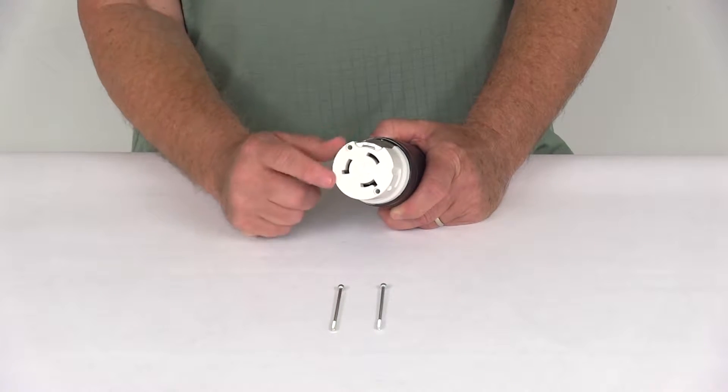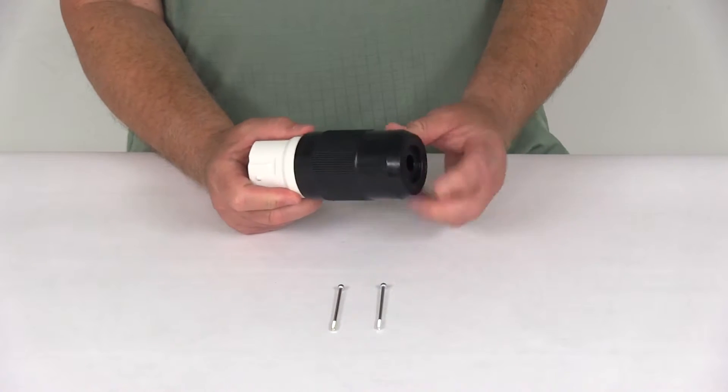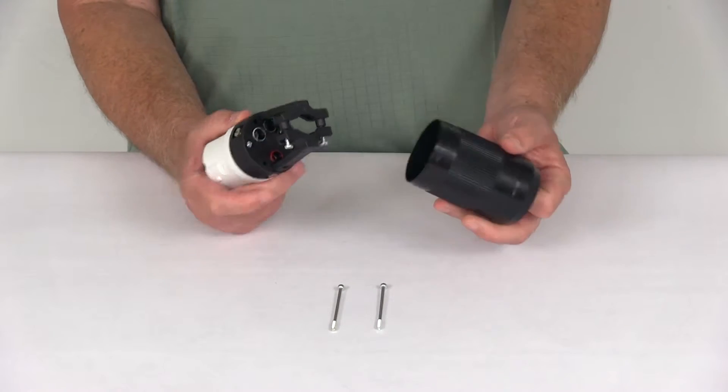The 50 amp detachable twist lock connector is on this end. On this end, if you pull that off, you can run your wire right through here.